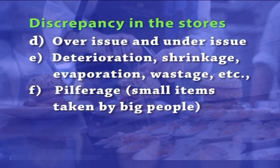Pilferage, that is, small items taken by people. Types of discrepancy: there may be either overage or shortage. Overage means actual stock being more than the booked stock. Shortage means actual stock being less than the booked stock. When there is discrepancy, if it is within the allowable limit, it may be written off. But if it is a higher quantity, then it has to be enquired into and responsibility fixed.